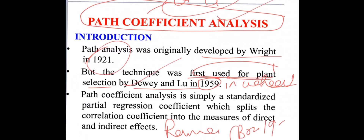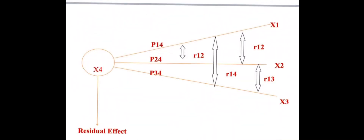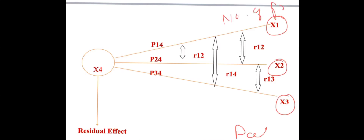Path coefficient analysis is simply a standardized partial regression coefficient which splits the correlation coefficient into measures of direct effect and indirect effect. Let's understand path coefficient analysis by using the path diagram. Characters x1, x2, and x3 are the independent variables — for example, number of primary branches per plant, number of pods, or number of seeds per pod.